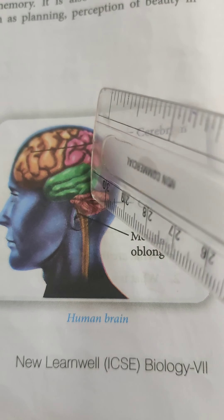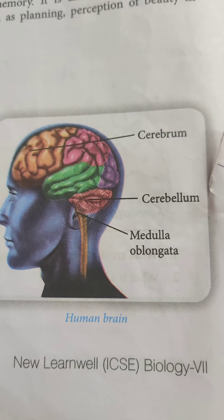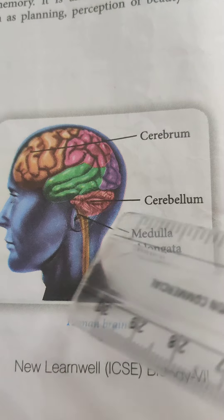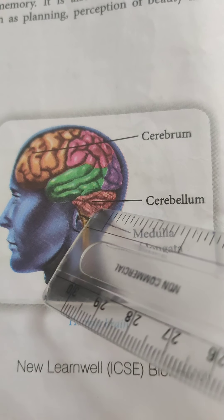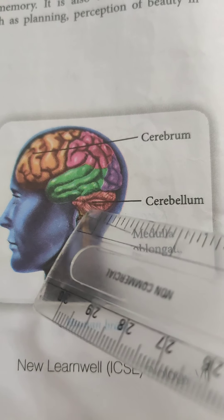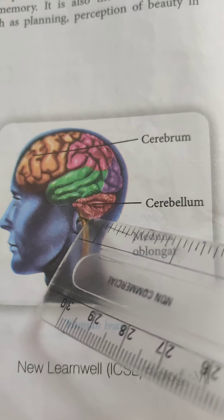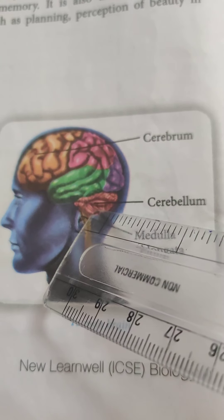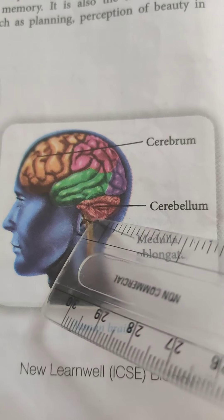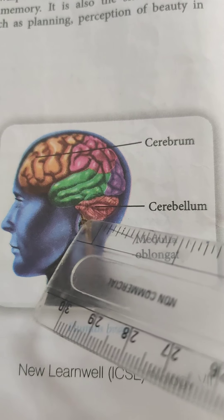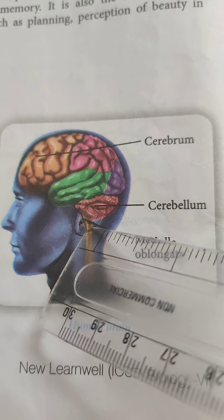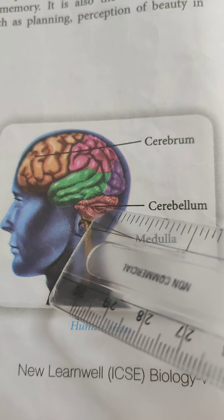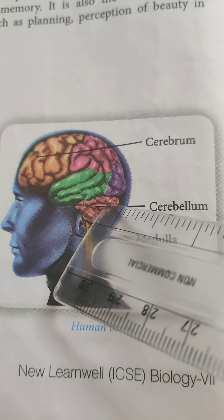Cerebellum is a small egg-shaped part of the brain situated at the base and under the cerebrum. Its main function is to coordinate voluntary body movements and maintain balancing of the body.